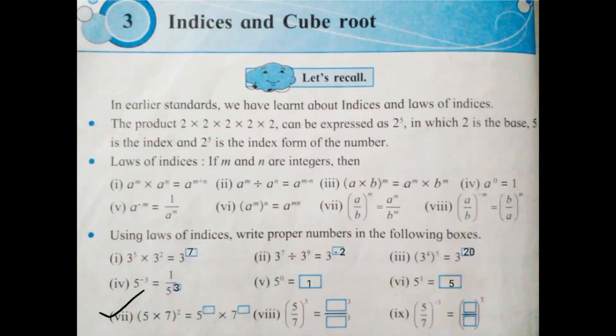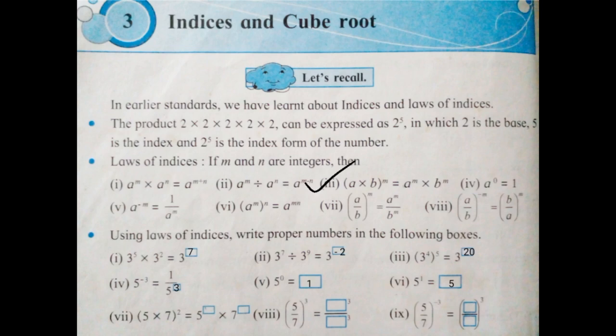Next: 5 into 7 in bracket raised to 2 is equal to 5 raised to box into 7 raised to box. In multiplication in index, you have to fill the proper number in the boxes. The formula is A into B in bracket raised to M is equal to A raised to M into B raised to M. According to this formula, the answer is 5 raised to 2 into 7 raised to 2.